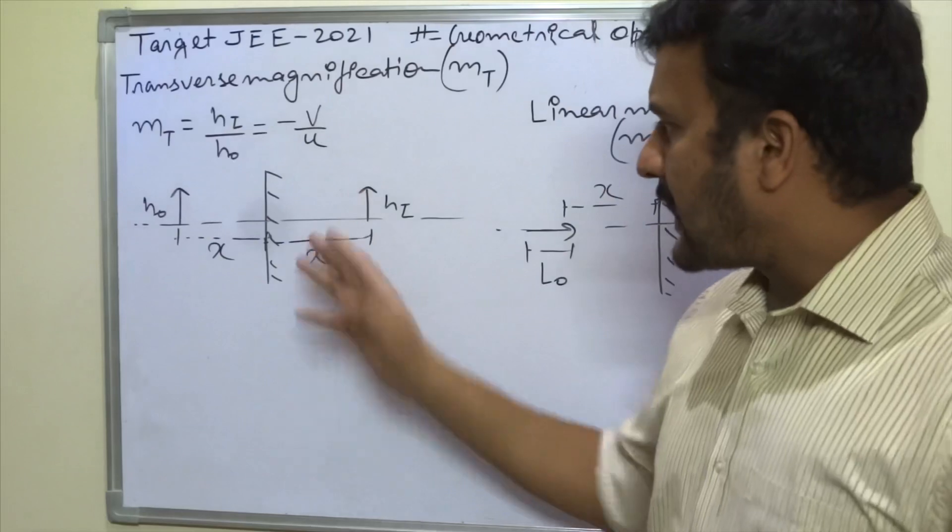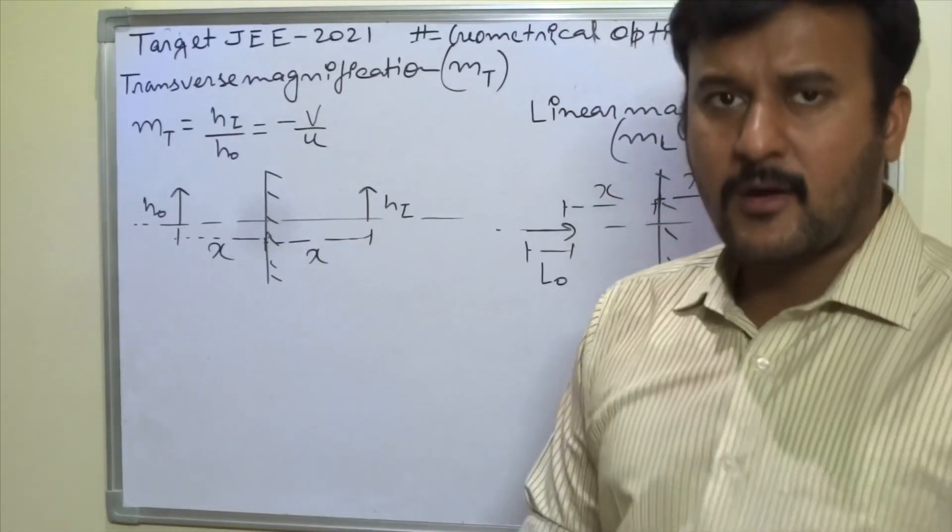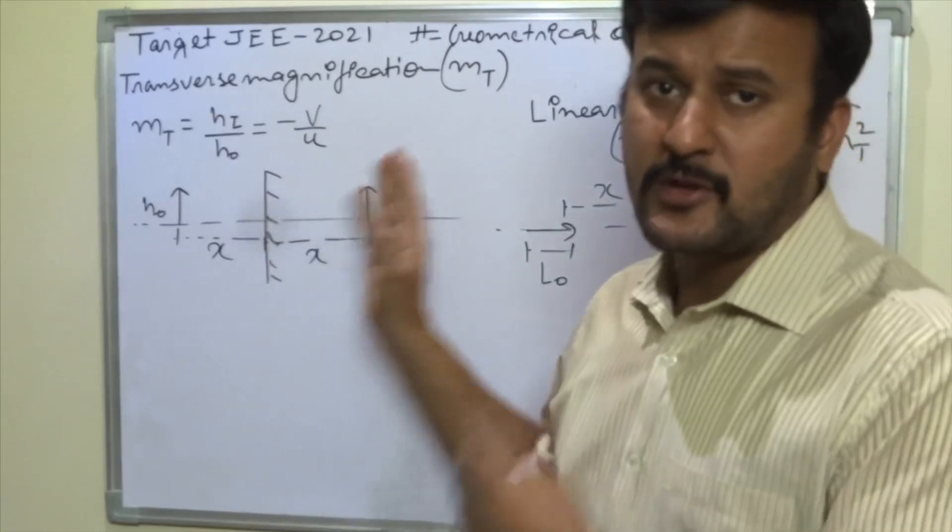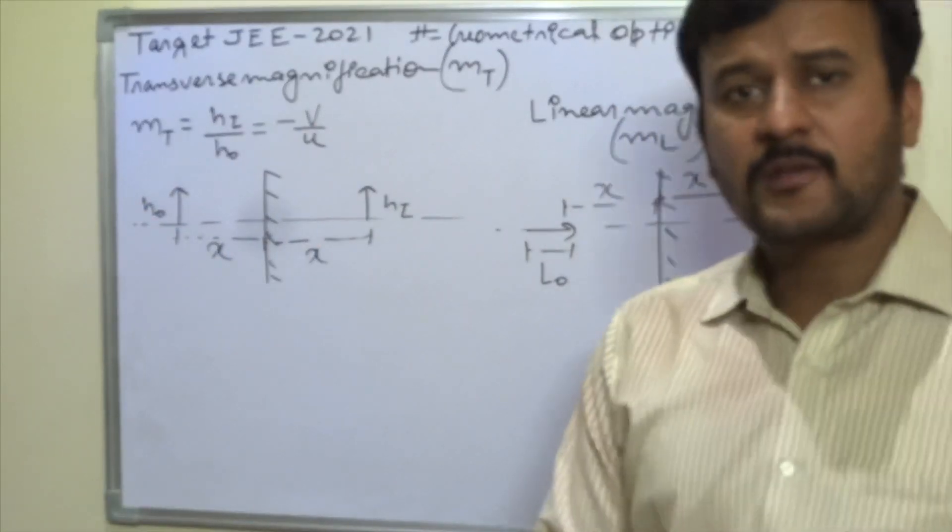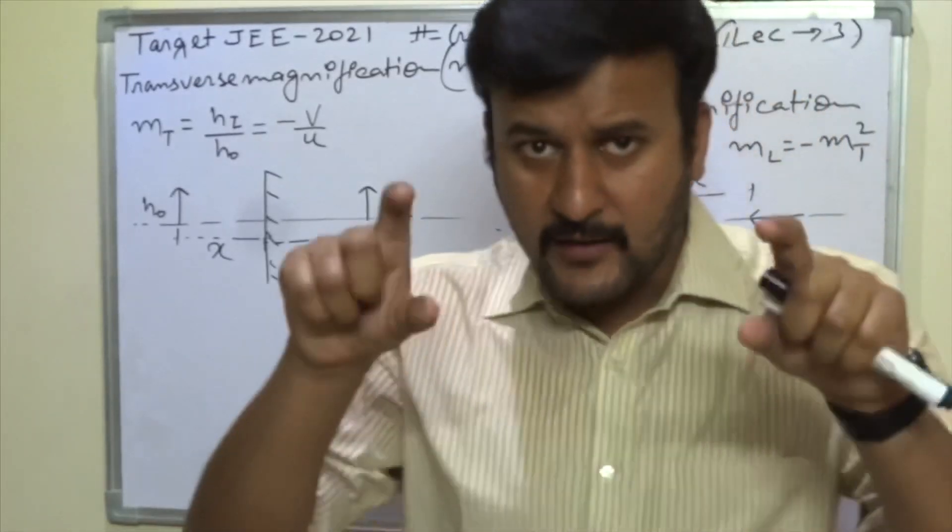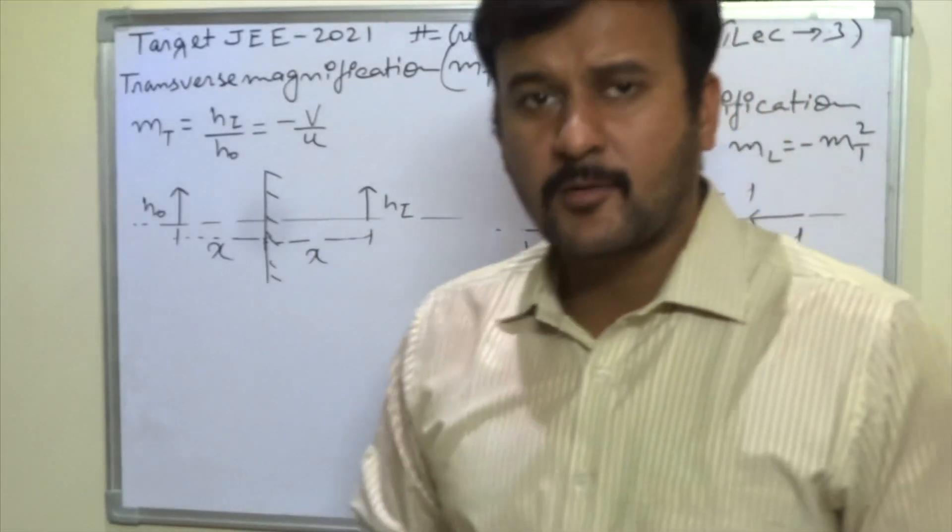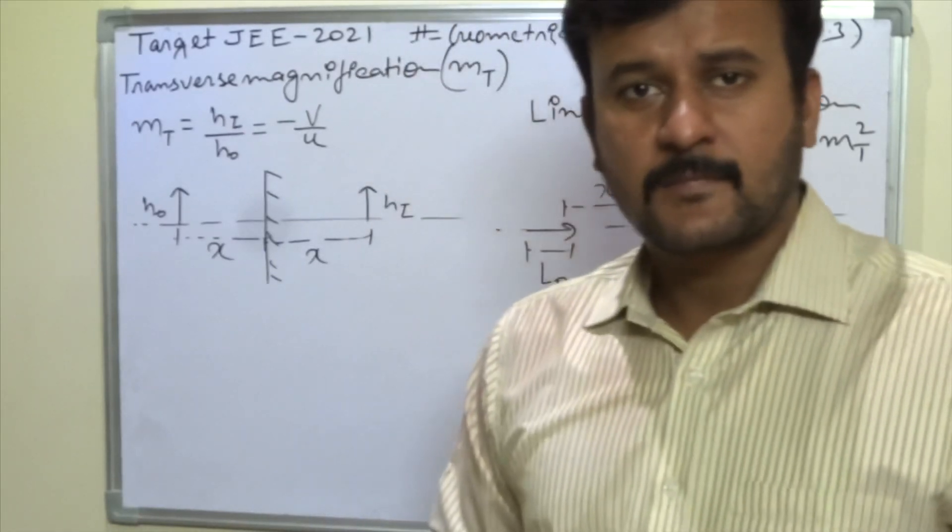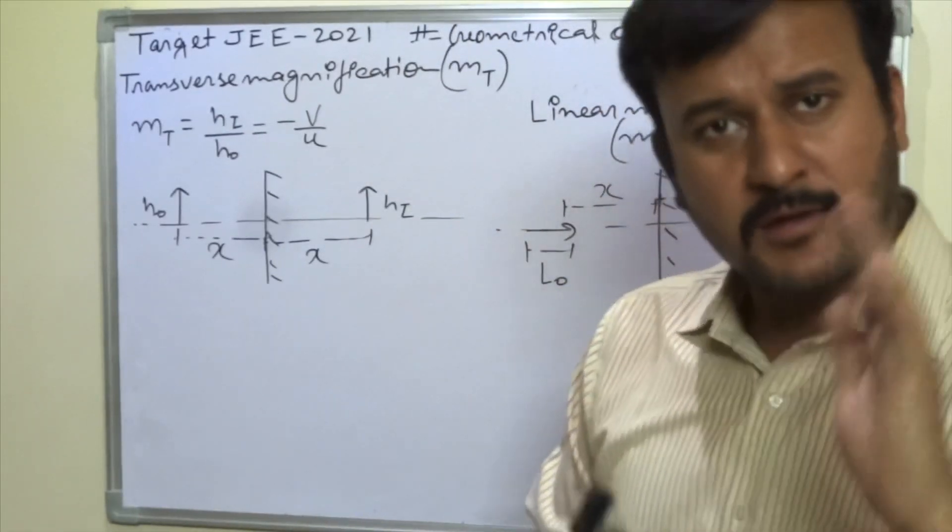But I will tell you that we know that in plane mirror, object and image, the height of image and height of object is the same. Obviously when we are standing in the mirror, then the height of image and the height of object is equal.